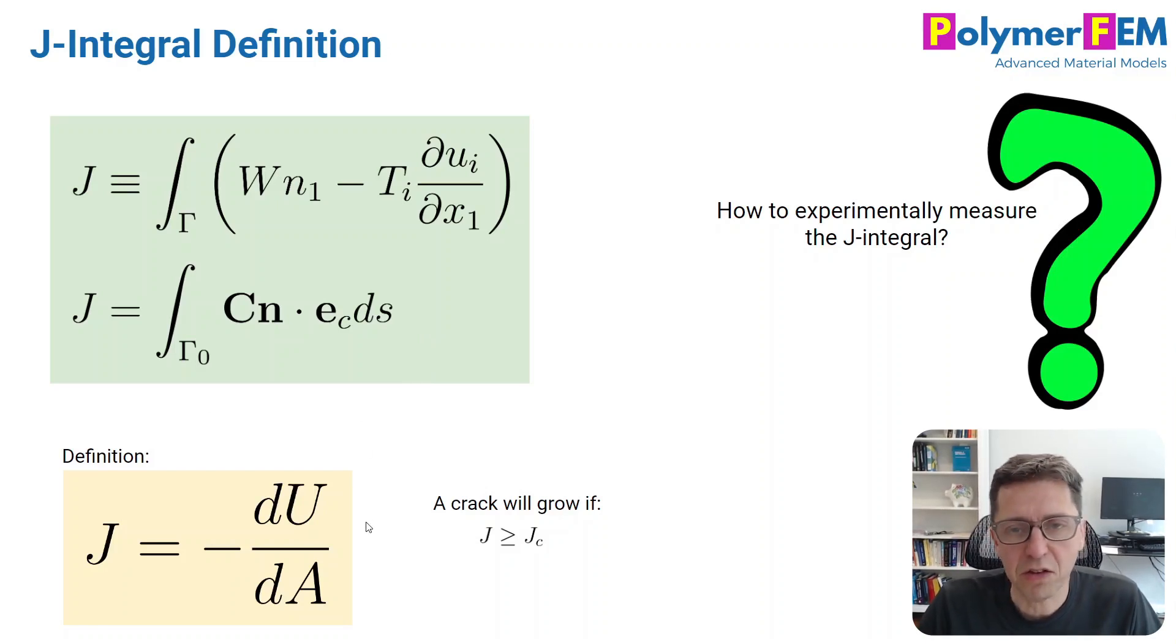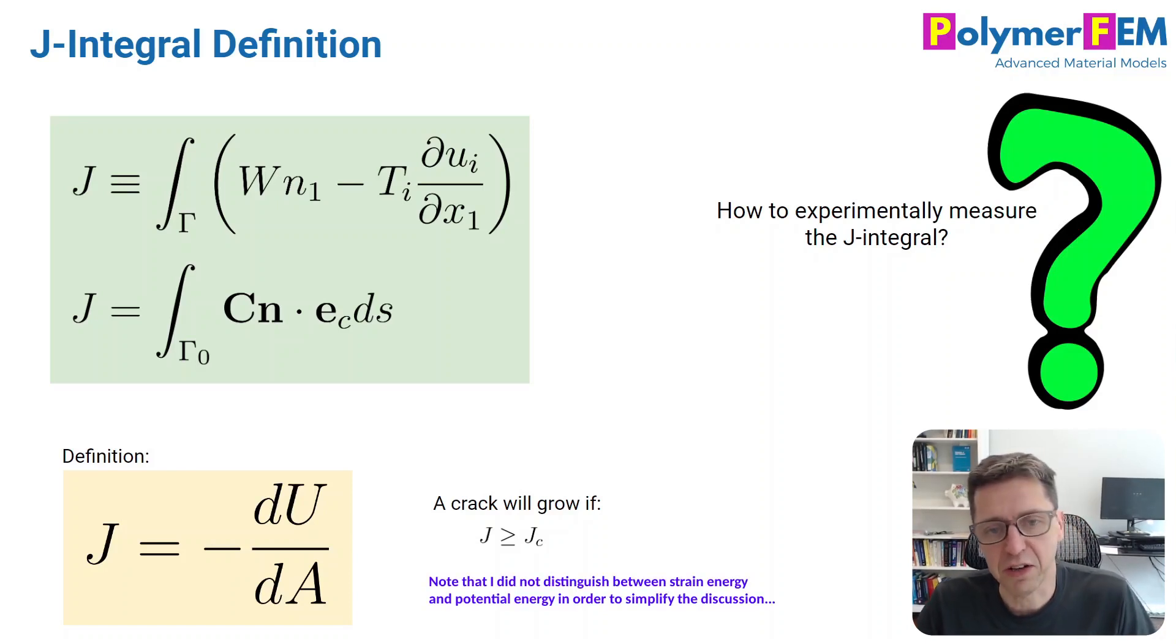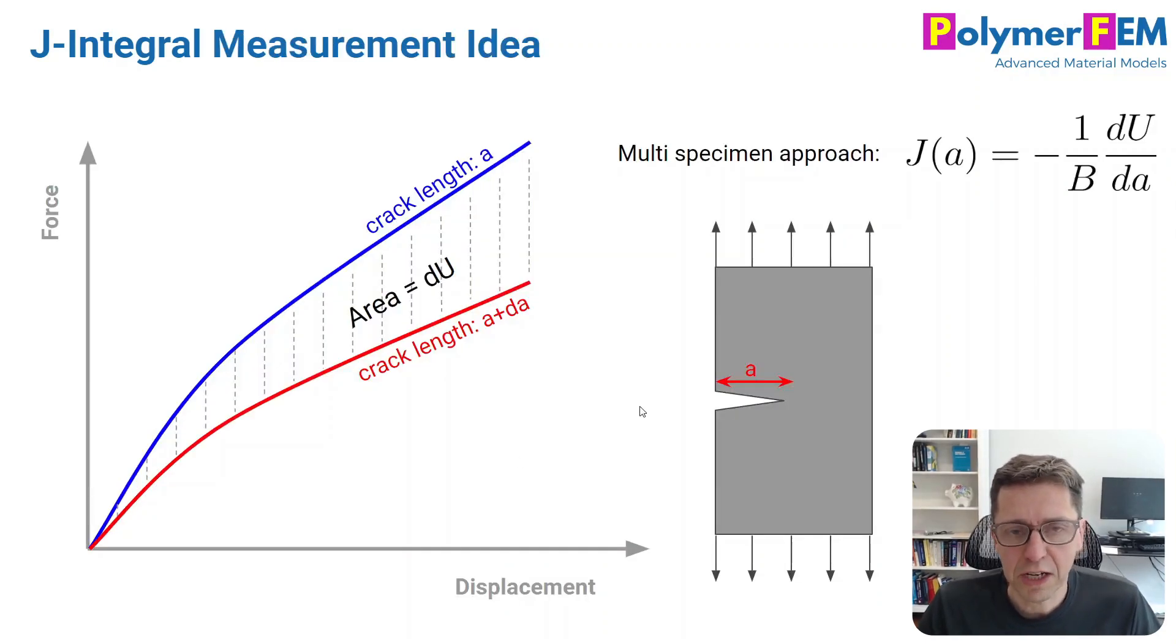The J-integral is really just the energy release rate - how much does the energy change as a crack grows? We remember that a crack will grow if the J-integral is larger than a critical value for a given material. So let's talk about how this is done experimentally.